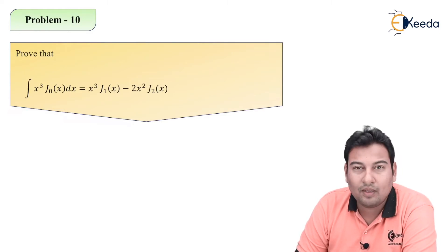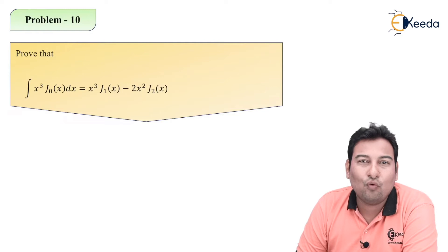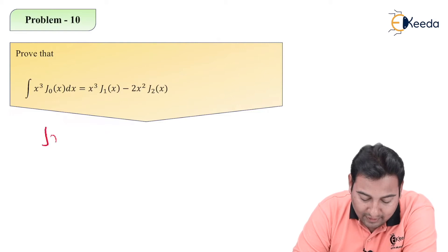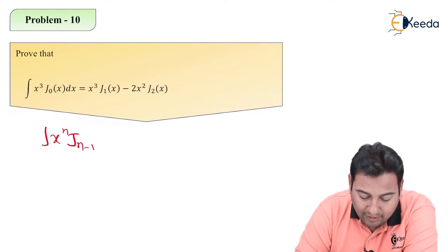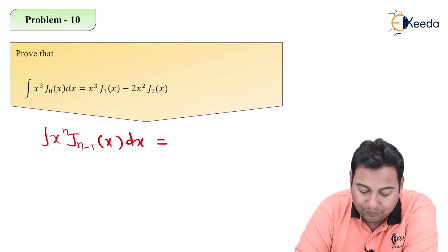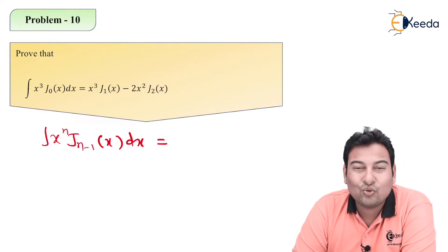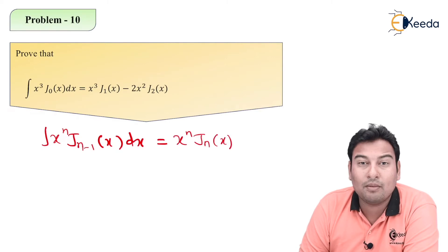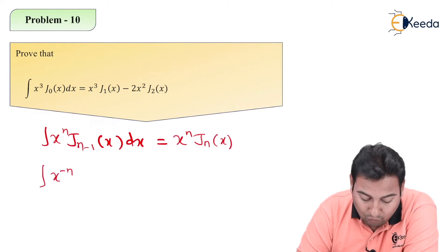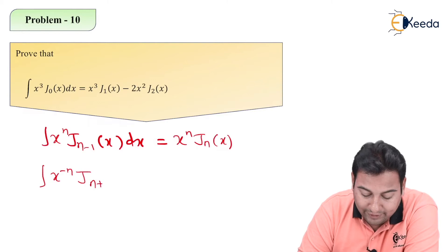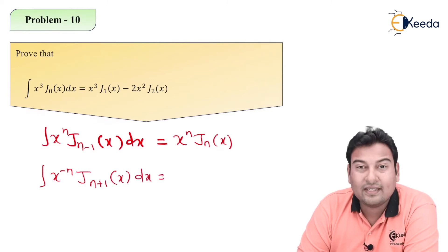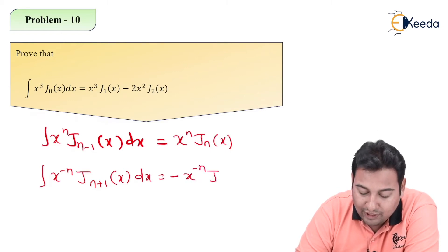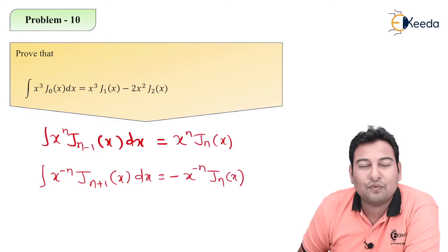If you observe this problem, let me write down the two formulas we have for integration — Formula 2 and Formula 4. Formula 2 says: the integral of x^n·J_{n−1}(x)dx is equal to x^n·J_n(x). Formula 4, since it involves x^{−n}, has a negative impact: the integral gives minus x^{−n}·J_n(x). These are the two formulas we have for integration.